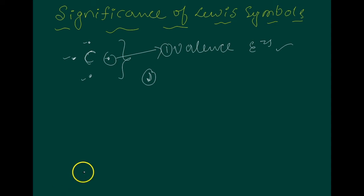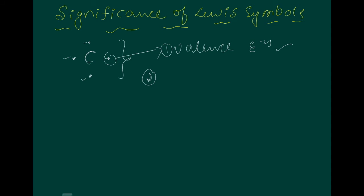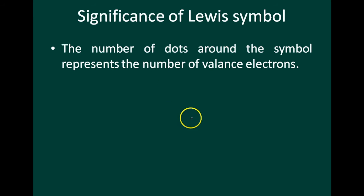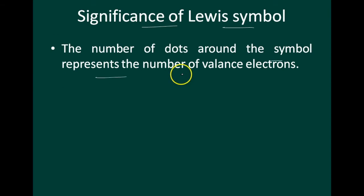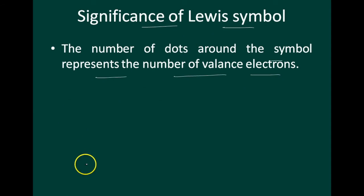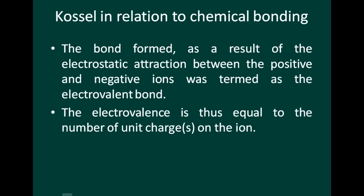This is the significance of the Lewis symbol. Kossel, in relation to chemical bonding, drew attention to the following facts. The number of dots around the nucleus and symbol represents the number of valence electrons present in the outer shell.